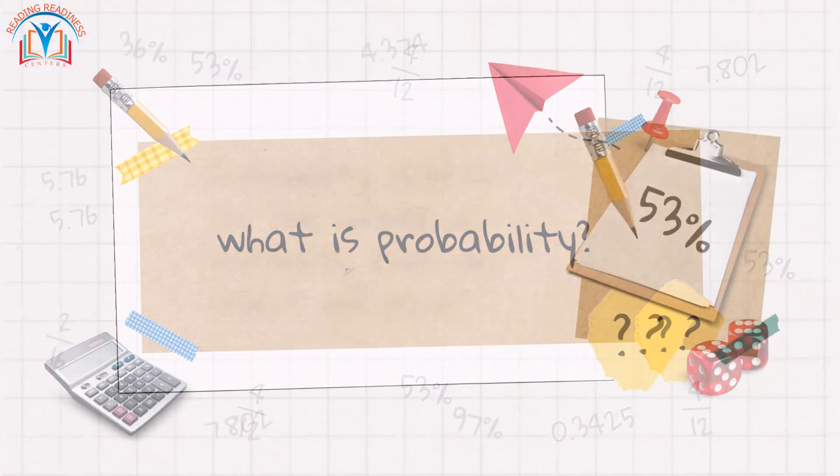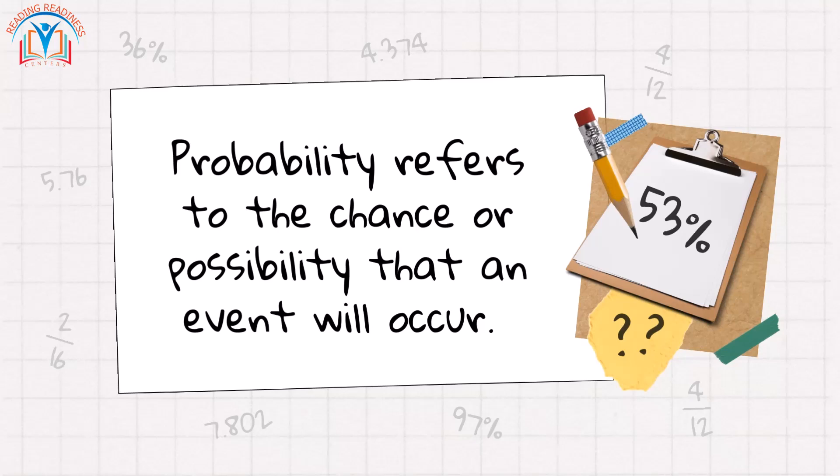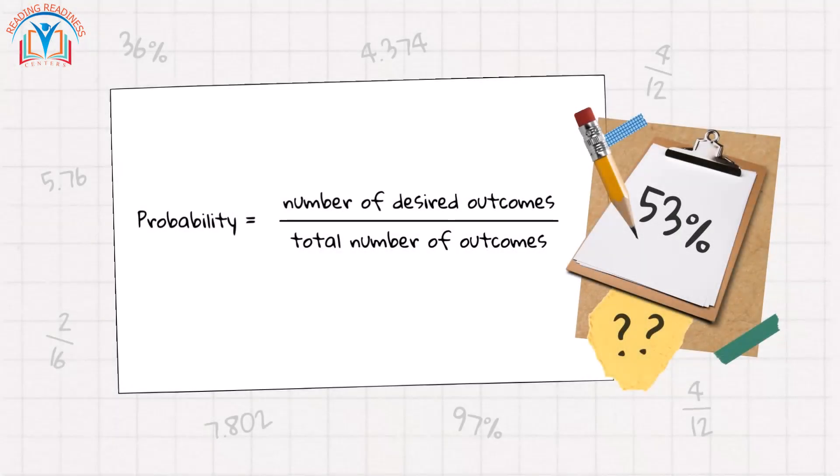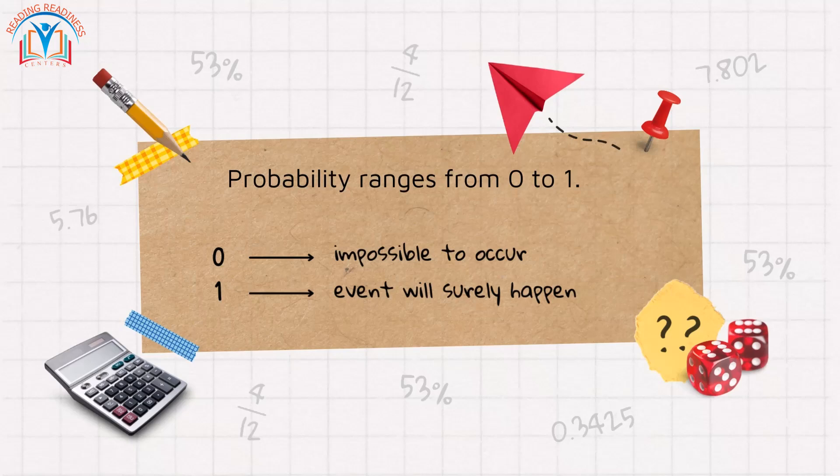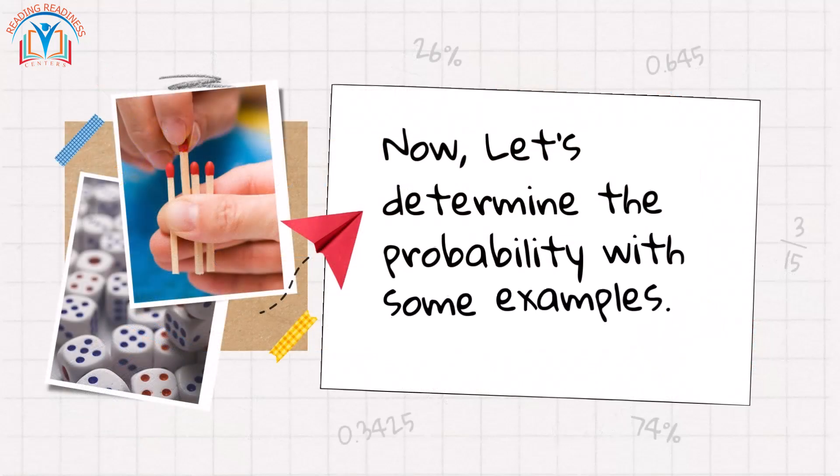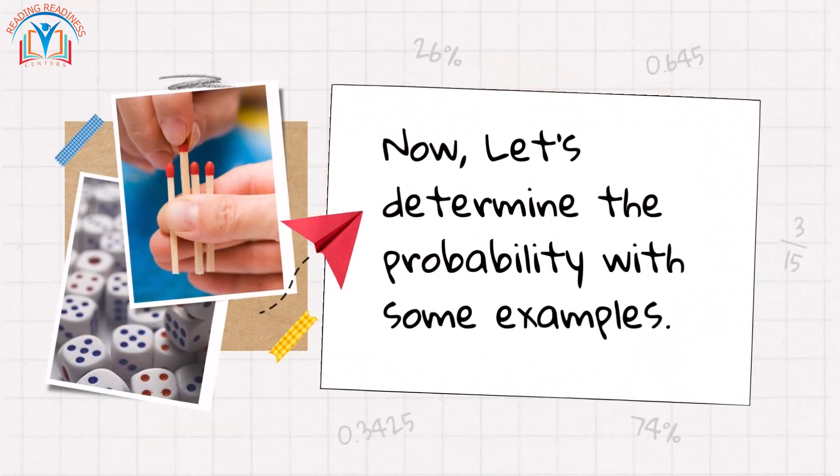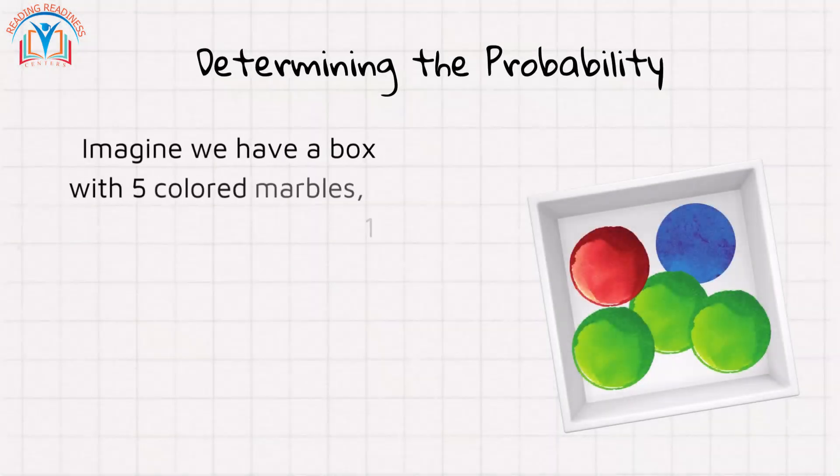Let's revise: what is probability? Probability refers to the chance or possibility that an event will occur. We can find probability by this formula: probability equals the number of desired outcomes divided by the total number of outcomes. Probability ranges from zero to one. If something is impossible to happen, its probability is zero. If something will surely happen, its probability is one. Now let's determine the probability with some examples. Imagine we have a box with five colored marbles: one blue, three green, and one red.